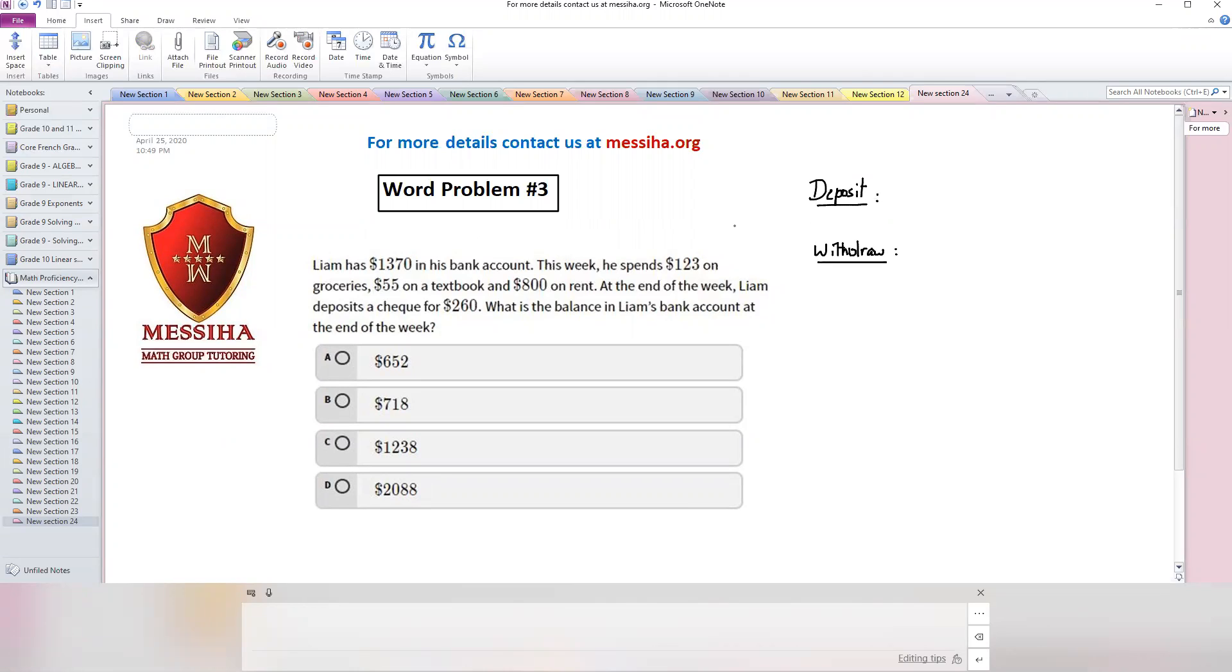So Liam has $1370, this is deposit. This week he spends $123 on grocery, this is withdrawal. And $55 on textbook, $55. And $800 on rent, $800. At the end of the week Liam deposits a check, so I go up for $260.